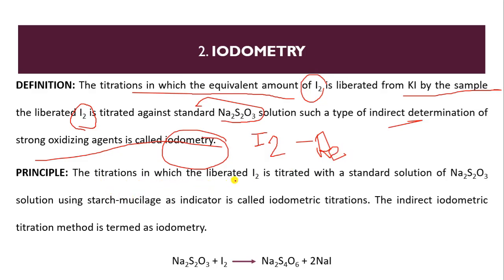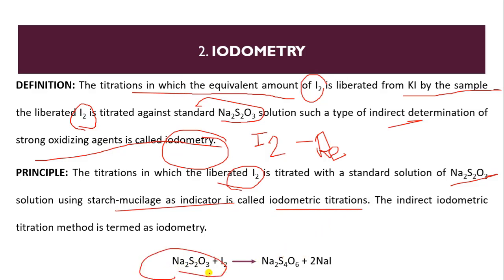In iodometric titration, the liberated iodine is titrated with sodium thiosulphate using starch mucilage as an indicator. The reaction example: sodium thiosulphate reacting with I₂ produces Na₂S₄O₆ and 2 NaI. This is the key reaction in iodometric titration.